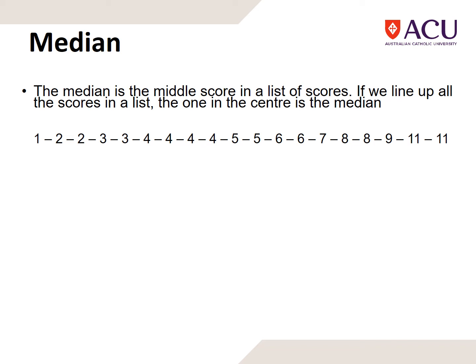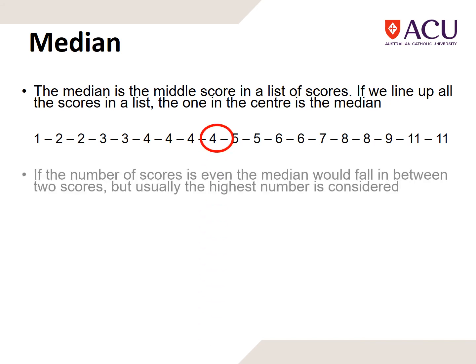The median is the middle score in the list of scores. If we line all the scores up, it's the one at the center. It's an actual score, and you can see here in this case it's a 4.